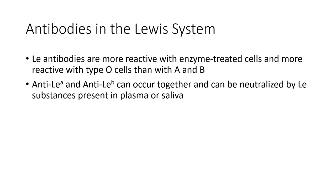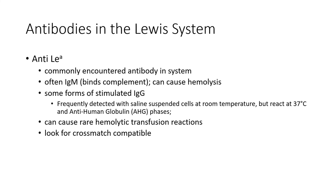Anti-Lewis A and anti-Lewis B can occur together and can be neutralized by Lewis substances present in plasma or saliva. Anti-Lewis A is common. It is often IgM, fixes complement, and can cause hemolysis. Some may be IgG. These IgG antibodies are frequently detected with saline suspended cells at room temperature and reactive at 37 degrees and anti-human globulin phases. Rarely they can cause hemolytic transfusion reactions.